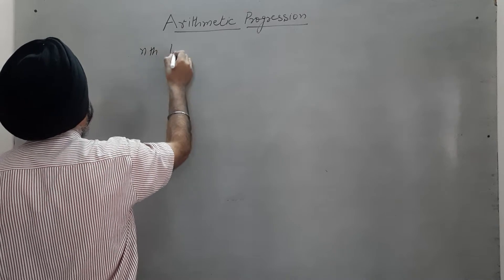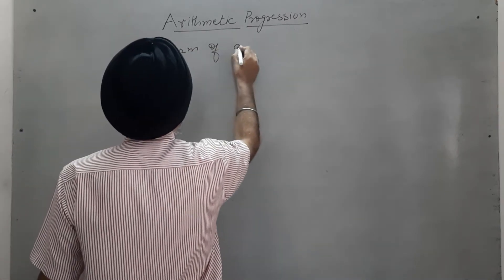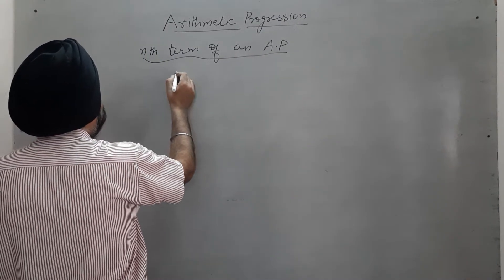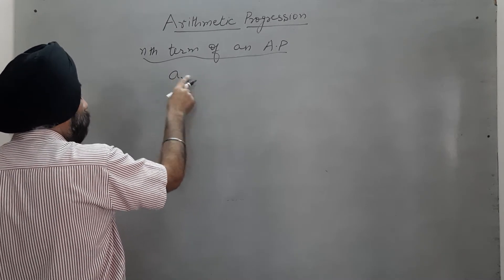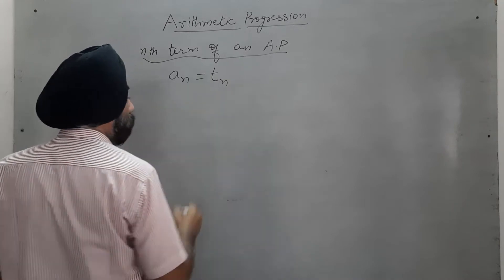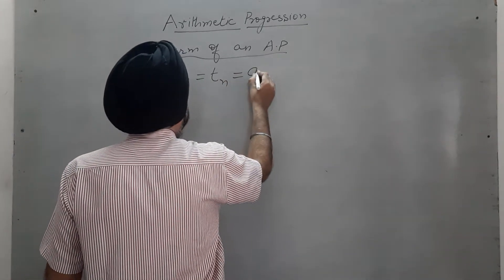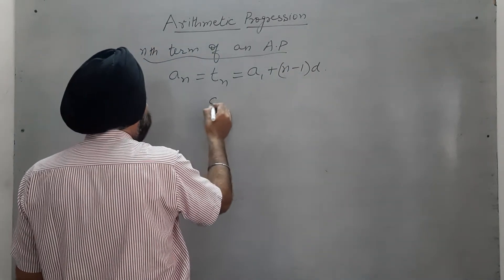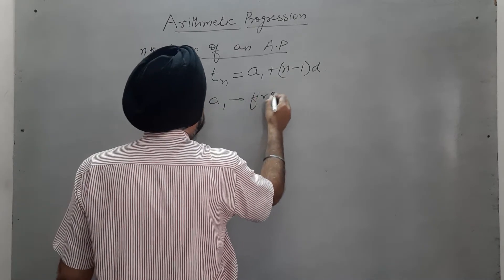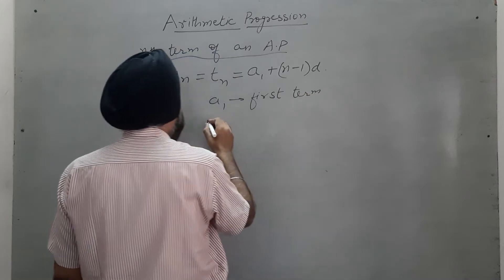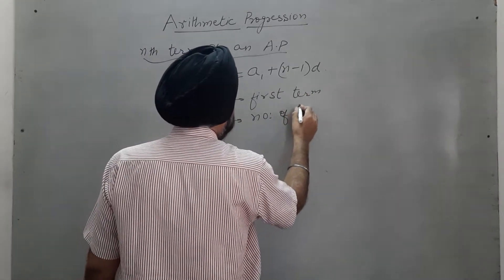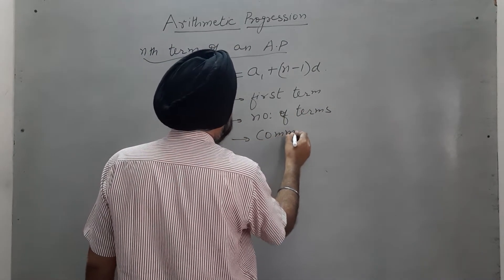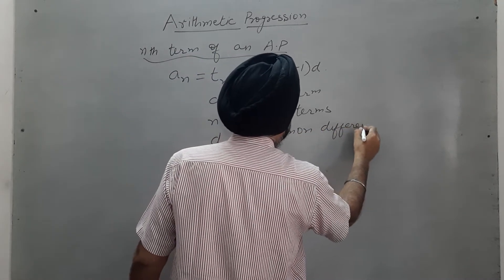The Nth term of an AP is given by: A_n = A₁ + (n minus 1) × D. Here A is the first term, n is the number of terms, and D is the common difference.